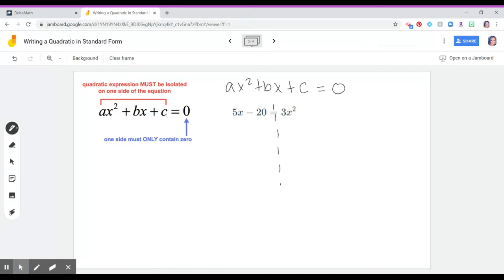On the left side, we have 5x and negative 20. So we have bx and c, but we don't have a. Notice this term right here is going to have to move over.